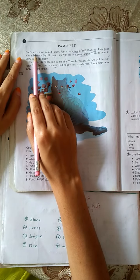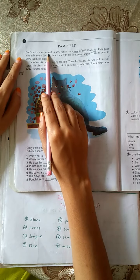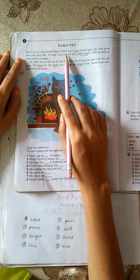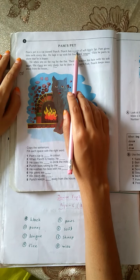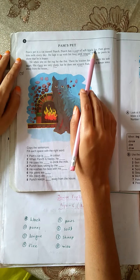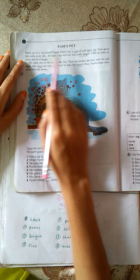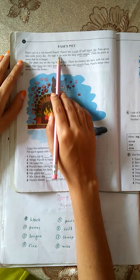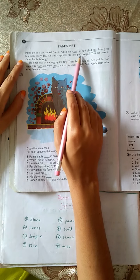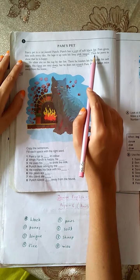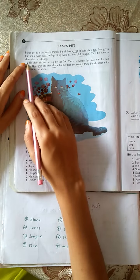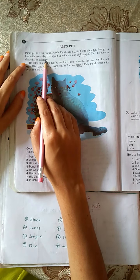Pam's pet is a cat named Punch. Punch has a coat of soft black fur. Pam gives him milk every day. He laps it up with his long pink tongue. Then he purrs to show that he is happy.